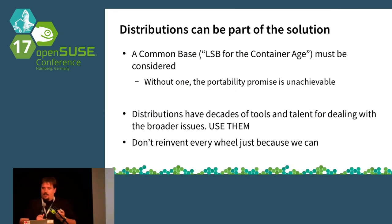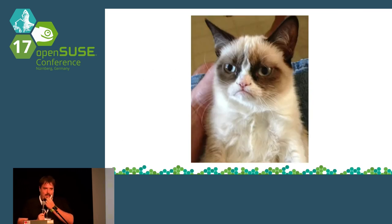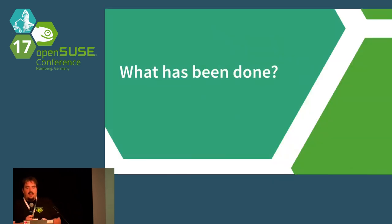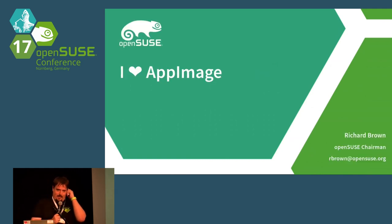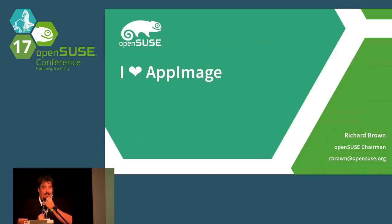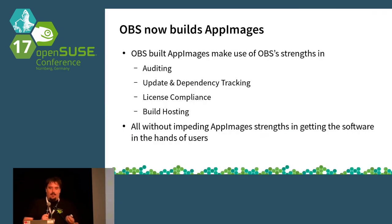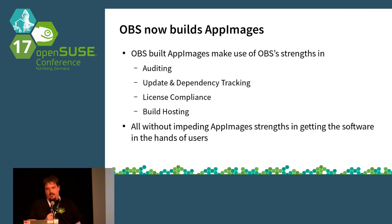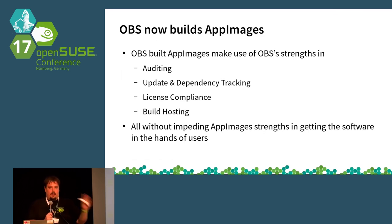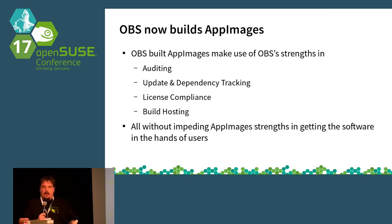My question no longer is what are we going to do — it's actually what has been done already. From being a real skeptic of all these technologies, given what's been done, I now love AppImage. Because OBS now builds AppImages. Our build service can now take our packages that we have for Tumbleweed, for Leap, and for everything else, even our develop projects, and build AppImages from that. So all those problems about security compliance, security auditing, license tracking, dependency tracking, figuring out how and when to rebuild stuff — all these problems we'd already solved in the distribution space — the AppImage guys, by working with us, have now solved in the AppImage space as well.